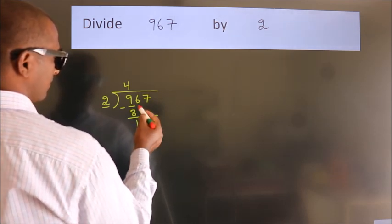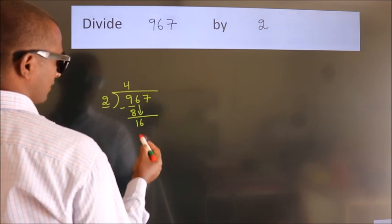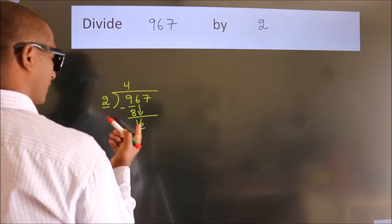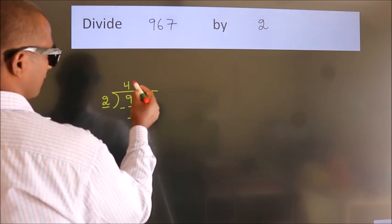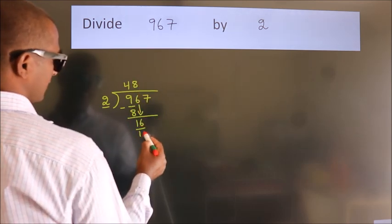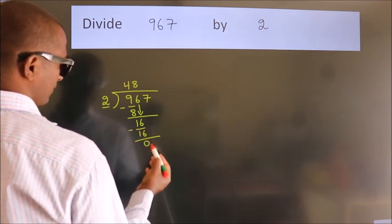After this, bring down the beside number. So 6 down. So 16. When do we get 16? In the 2 table, 2 times 8 equals 16. Now we subtract. We get 0.